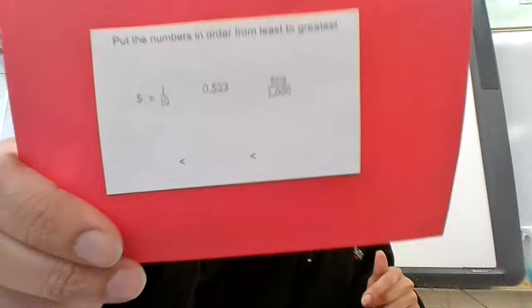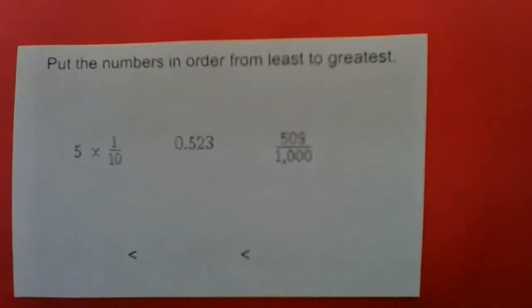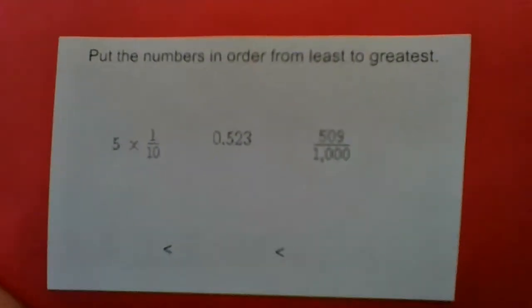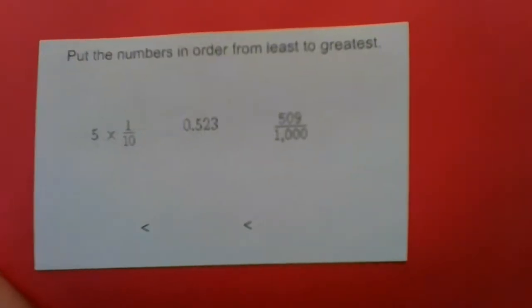Put the numbers in order from least to greatest. So I have 5 times 1/10. And the next one is 0.523. And the last one is 509/1000.